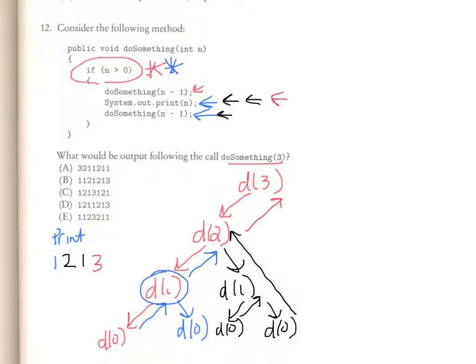So now, I print a 3. And then, from here, I now call a do something 2. And then, this entire pattern continues.